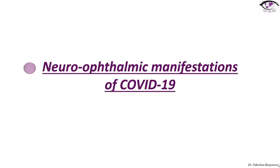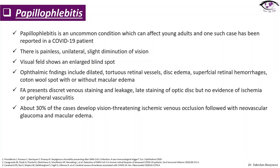Neuro-ophthalmic manifestations of COVID-19. Papillophlebitis is an uncommon condition which can affect young adults, and one such case has been reported in a COVID-19 patient. There is painless unilateral diminution of vision, and the visual field shows an enlarged blind spot. Ophthalmic findings include dilated, tortuous retinal vessels, disc edema, superficial retinal hemorrhages, and cotton wool spots with or without macular edema. Fluorescein angiography presents discrete venous staining and leakage with late staining of the optic disc but no evidence of ischemia or peripheral vasculitis. About 30% of cases develop vision-threatening ischemic venous occlusion followed by neovascular glaucoma and macular edema.